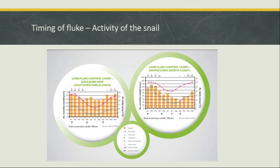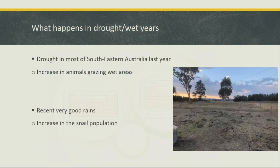In southeastern Australia, 2019 was probably one of the driest years in a long time. Usually with dry years, you see a reduction in parasite burdens because there's very little pasture and it's not a suitable environment for worms. But what we actually saw was an increase in liver fluke cases. It's not that the snail's environment got better — wet areas like springs and gullies actually shrank. Rather, animals were going down into those wet areas hunting for green feed and water.